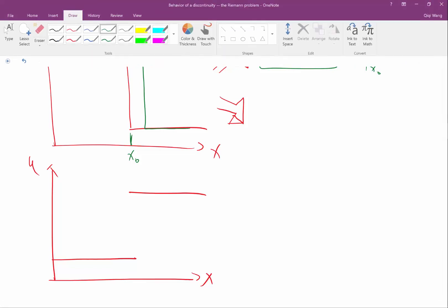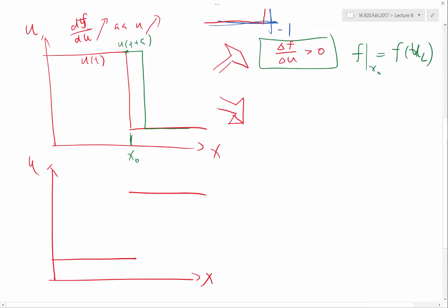While in the other case, if I have the opposite case, delta f over delta u is less than zero, the shock would have moved towards the left a little bit. And in this case, my f at x0 would be f at ur. So this is ul, this is ur.